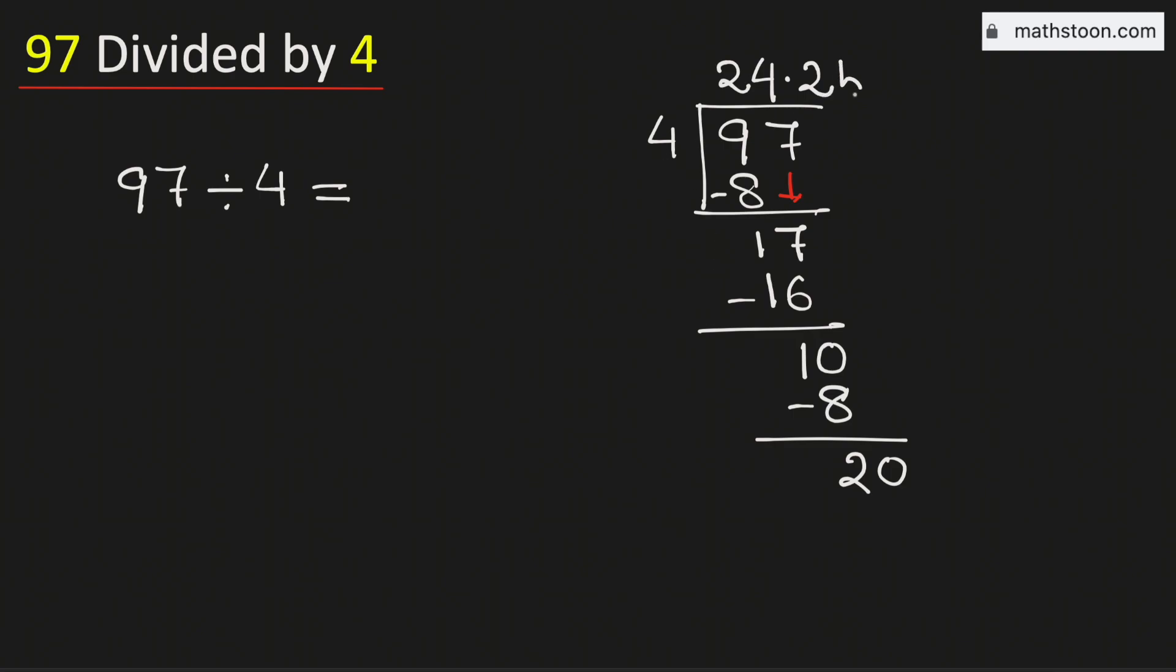And we know that 4 times 5 is 20. Subtract and we get 0. As we have obtained the number 0, so we will stop. Therefore 97 divided by 4 is equal to 24.25. And this is our final answer.